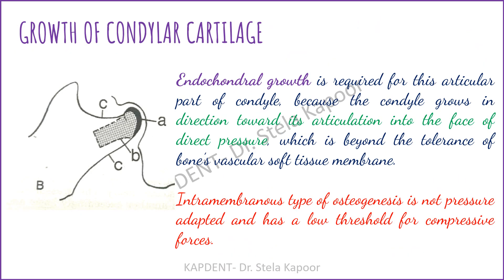As discussed in a previous video on mandible growth, the condyle is one of three locations exhibiting endochondral growth. As the condyle grows, it articulates in the direction of direct pressure. Intramembranous osteogenesis has a low threshold for compressive forces, and this direct pressure exceeds the tolerance of the bone's vascular soft tissue membrane. Therefore, endochondral growth is required for the articular part of the condyle, marked as 'A' in the adjacent figure.